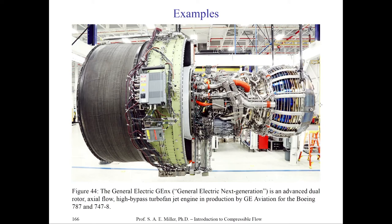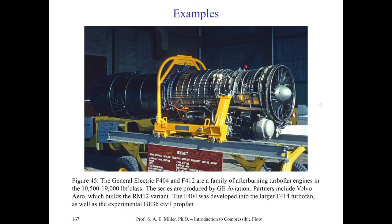Here's the GE F404 and F412 engines — afterburning or augmented engines in the 10,000 to 20,000 pound-force thrust class, produced by GE Aviation in partnership. The same concepts and physics apply to every one of these engines — be it a rocket, a high-bypass turbofan for a commercial aircraft, or a low-bypass augmented engine like this for military aircraft. This one appears bound for an F-18 Hornet.